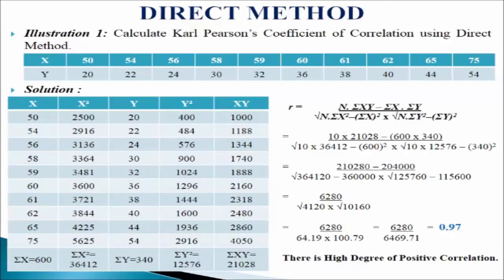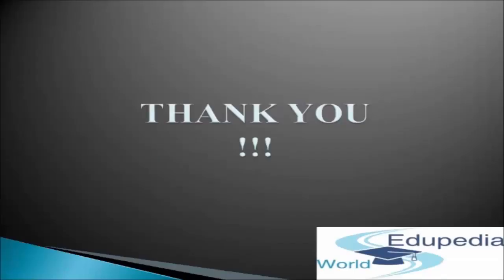We apply the direct method formula using all the computed values and we get r equals 0.97, confirming a high degree of positive correlation. Thank you for watching Edupedia World videos.